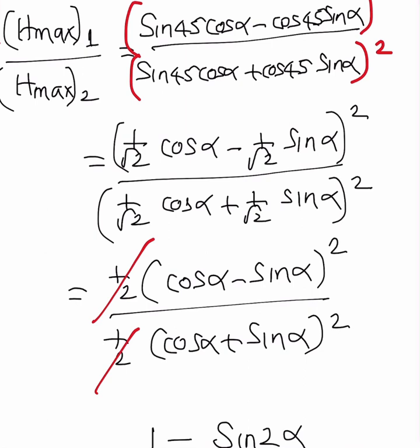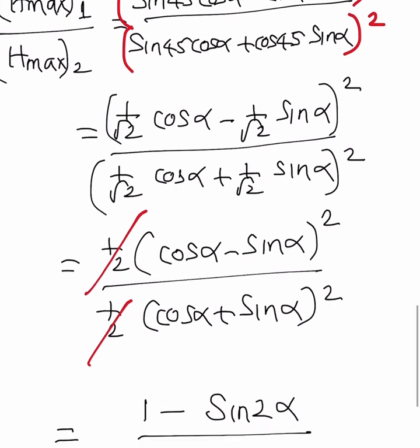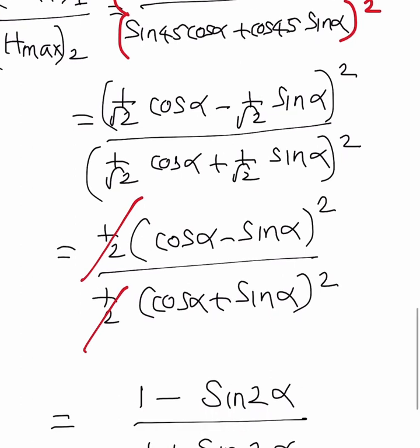That is what I have substituted here. In place of sin 45 and cos 45, I have substituted 1 by root 2, and it has whole square. Once it comes out of the bracket, 1 by root 2 will become 1 by 2.